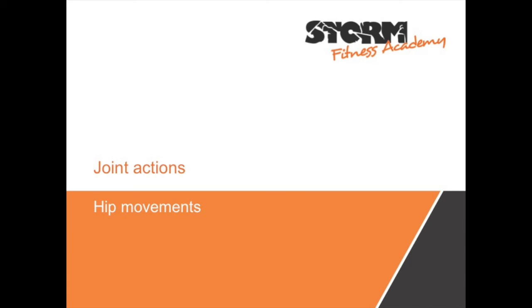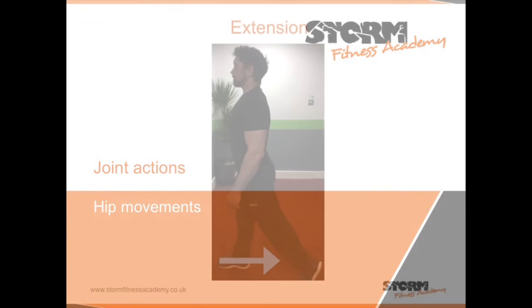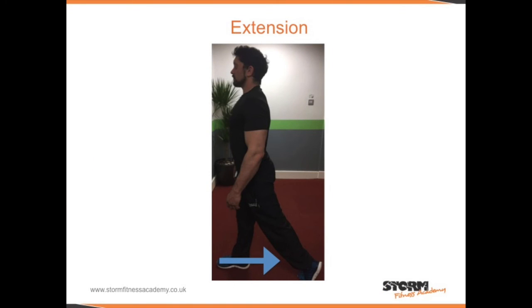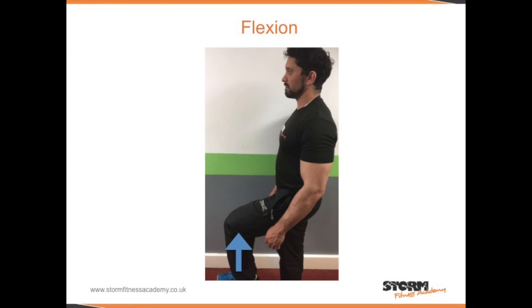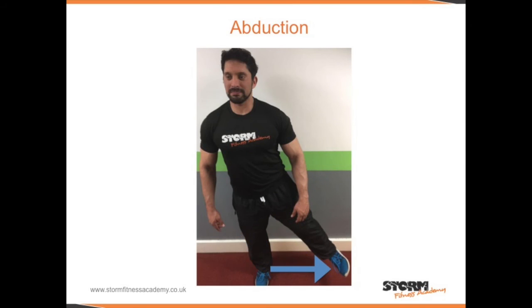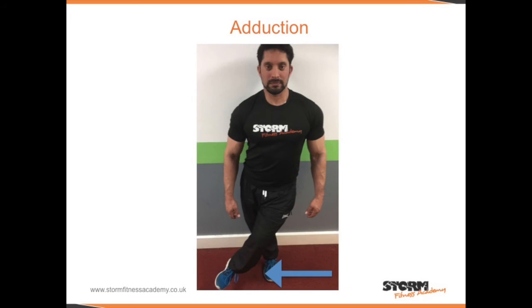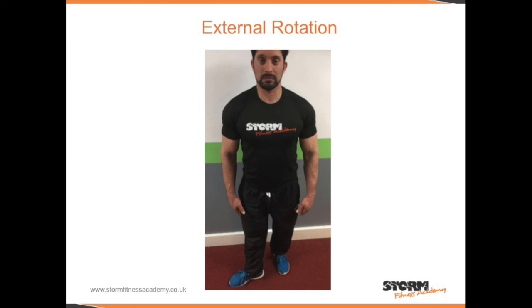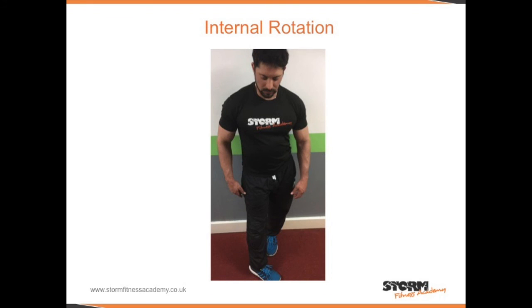This section illustrates the joint actions specific to hip movements: extension, flexion, abduction, adduction, external rotation, and internal rotation.